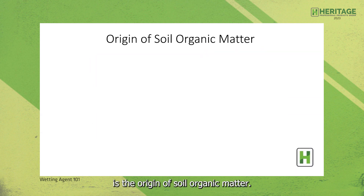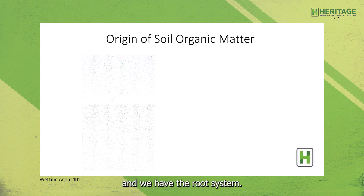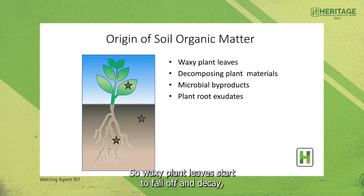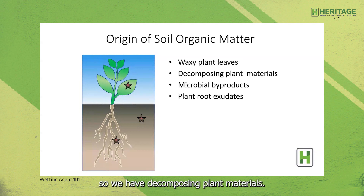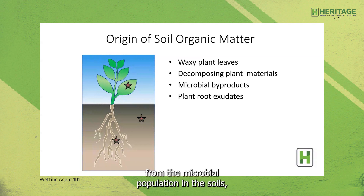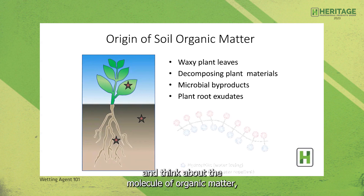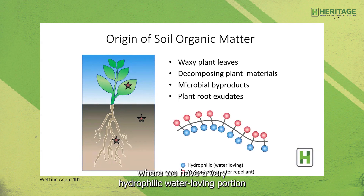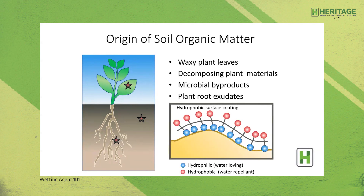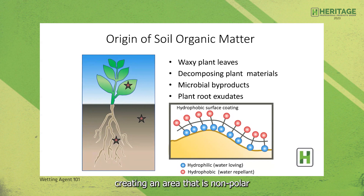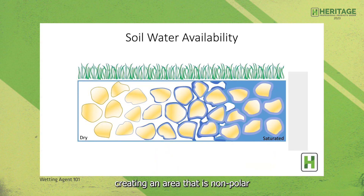The origin of soil organic matter includes actively growing leaf and stem material and the root system. Waxy plant leaves fall off and decay, creating decomposing plant materials. We have microbial byproducts from the microbial population in the soils, and the plant root system exudates. All of these contribute to soil organic matter. The molecule of organic matter has a very hydrophilic, water-loving polar portion and a very hydrophobic, water-repelling non-polar portion. That water-repelling portion essentially sticks out from the soil particle, creating a non-polar area around the entire soil particle.